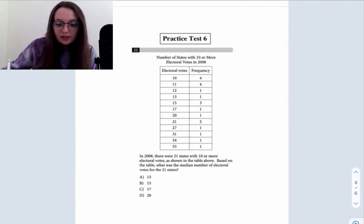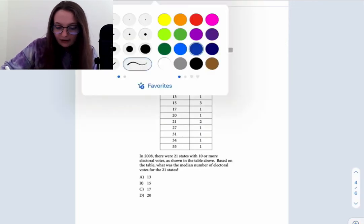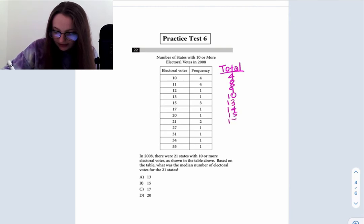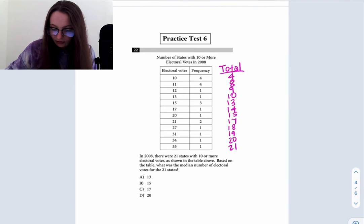All right, so let's do the same thing for question 22. We need a total column. The states that have 10 electoral votes, it's going to be four. By the time we get to 11, that would be four plus four, so eight total, and then we continue down: 9 total, 10 total, 13 total, 14, 15, 17, 18, 19, 20, and 21 total.